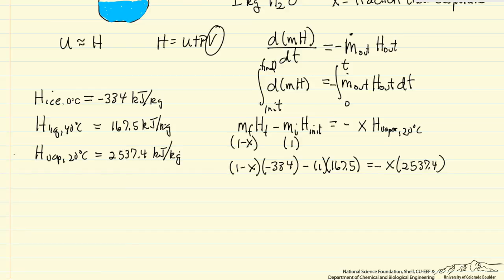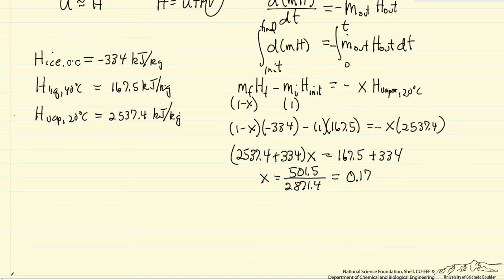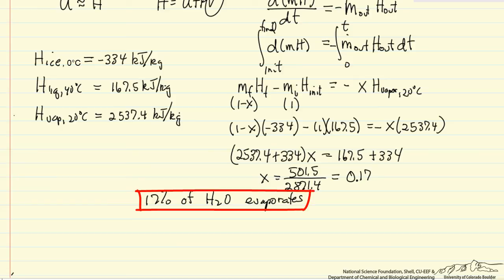So I can rearrange this equation and solve for x. This says that 17% of the water evaporates by the time the rest freezes. Of course now the evaporation would slow significantly because the vapor pressure of ice is lower than the vapor pressure of water.